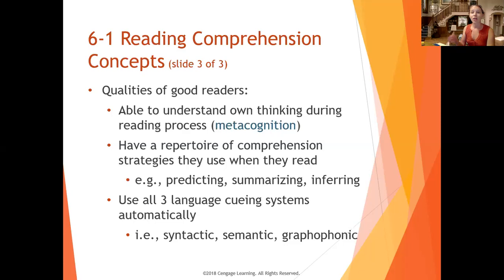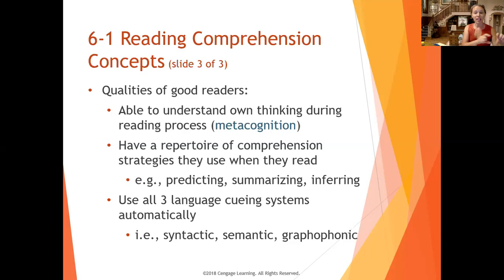Lastly, we use all three language cueing systems automatically. Just to re-familiarize yourself: we have the graphophonic cueing system, which is the symbol and how the word sounds — think about phonics, it's the picture of the word. Then we have semantics, which represents the meaning of a word. And then we also have syntax, which is word order or sentence structure. Those are all things I need to already know so that I can get comprehension out of what I'm reading or being read.